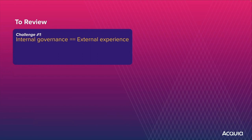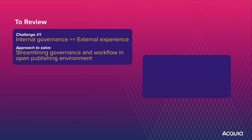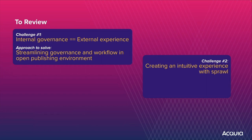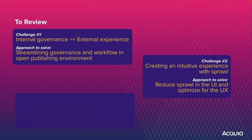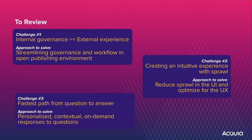To quickly review the three challenges: number one, internal governance equals external experience — the approach is to streamline governance and workflow in an open publishing environment. Number two, creating an intuitive experience with sprawl — the approach is to reduce sprawl in the UI and optimise for the UX. Number three, the fastest path from question to answer — the approach is through personalisation, contextualisation, and on-demand responses, which traditionally meant support tickets and more recently chatbots, and now generative AI presents a new opportunity.